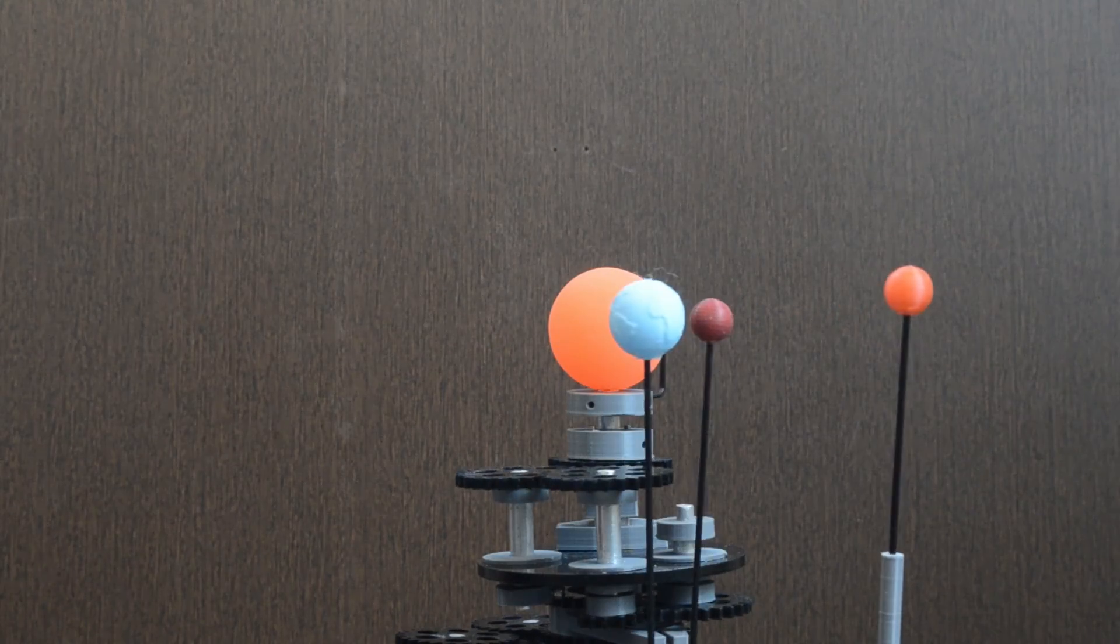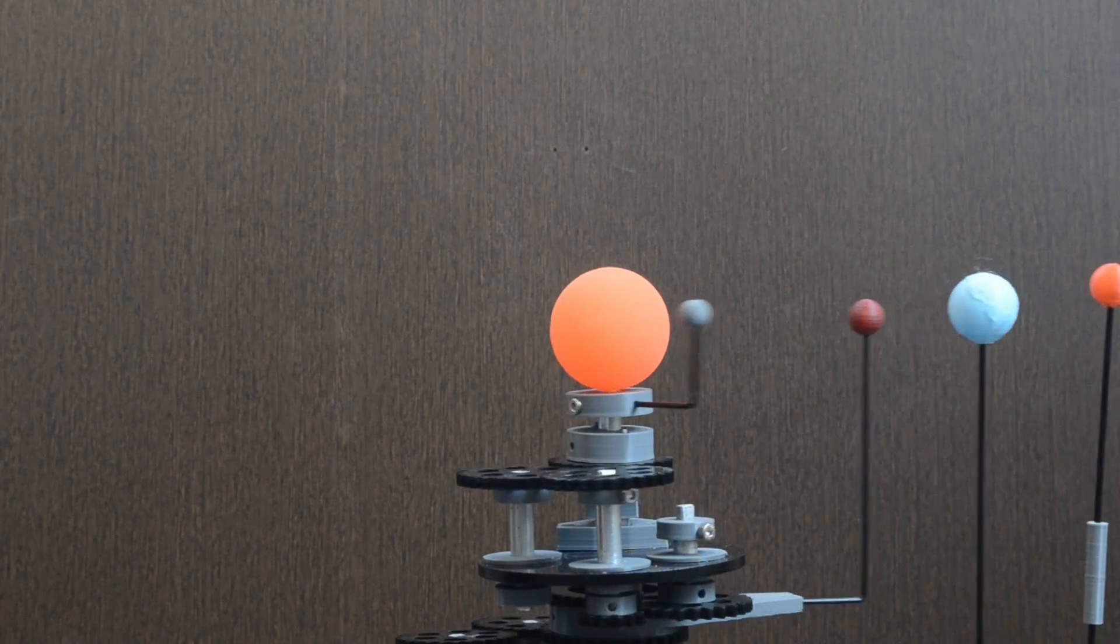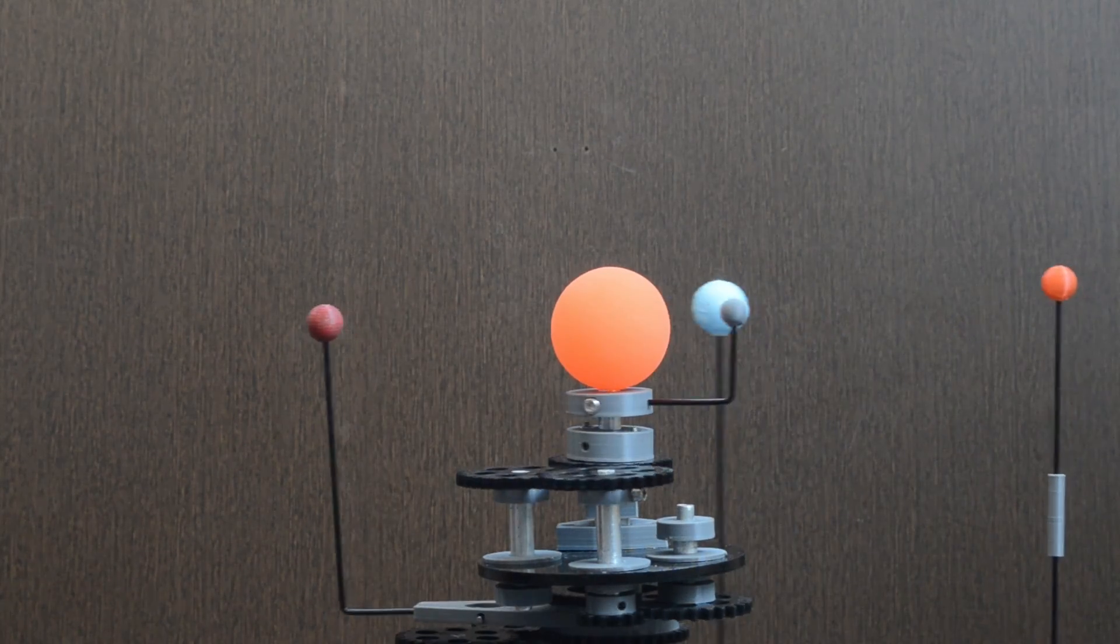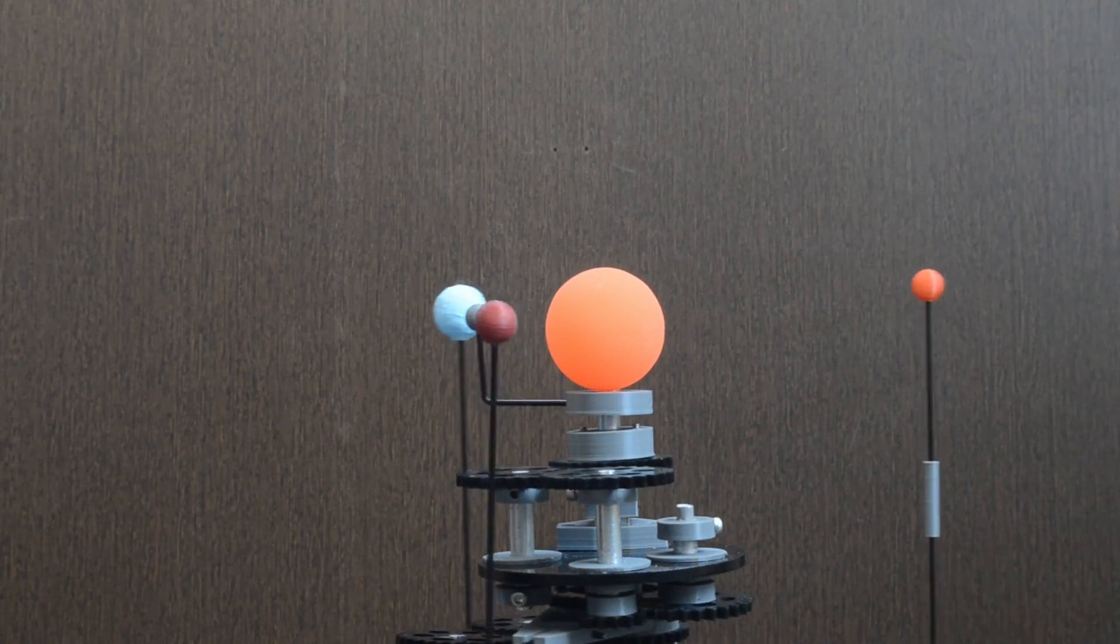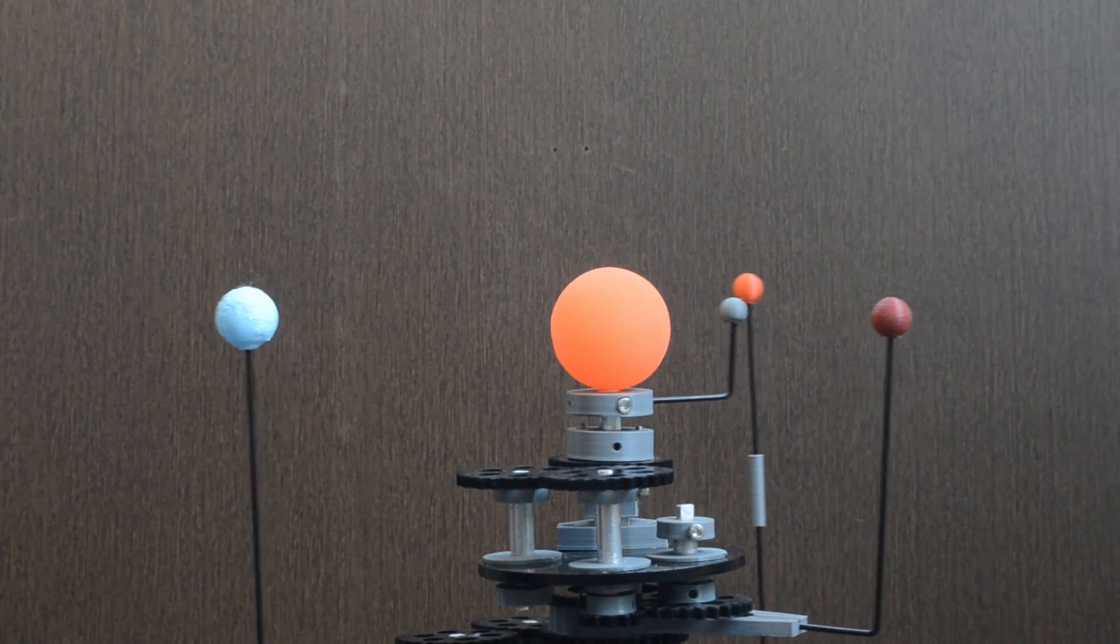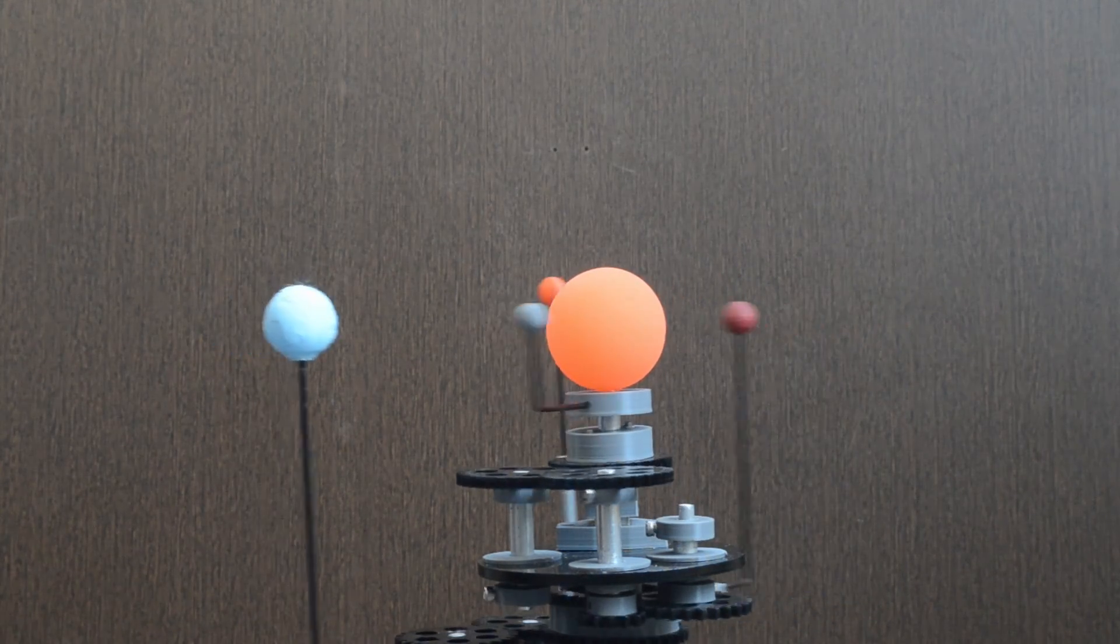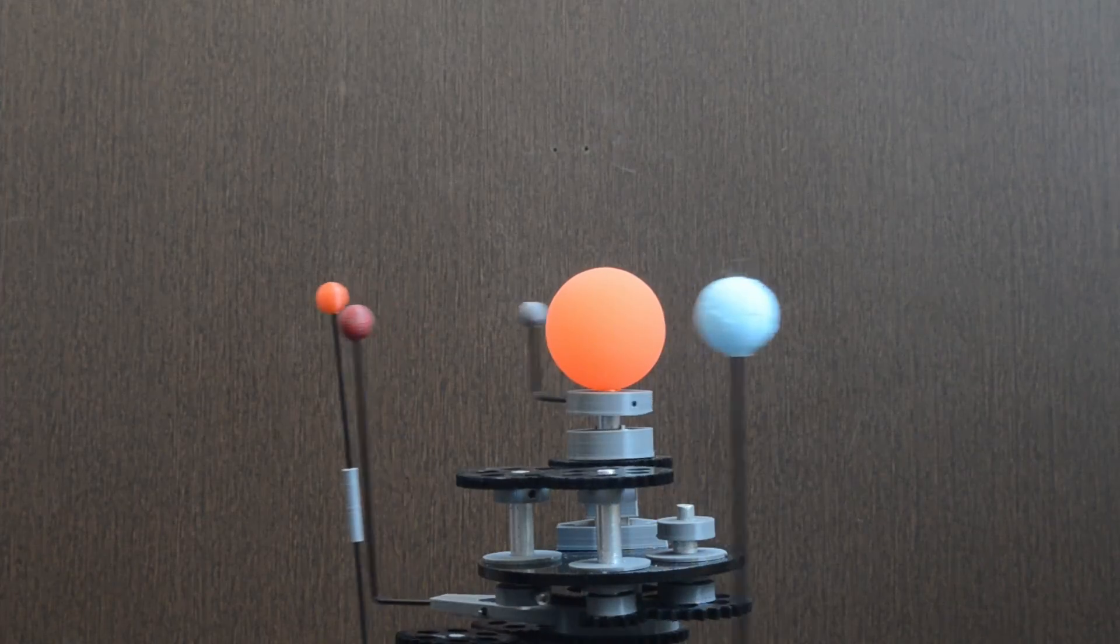In astronomy, a transit occurs when one object in the sky appears to cross the face of another. In our case, Sun. It is very similar to the eclipse we observe on Earth except the shadow part.